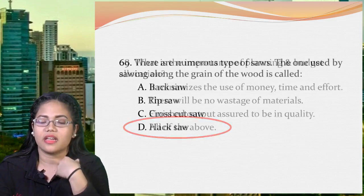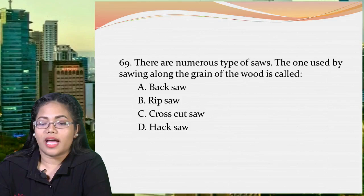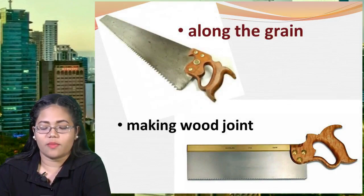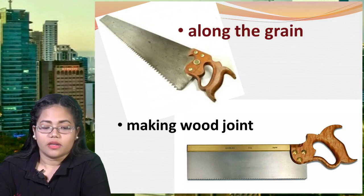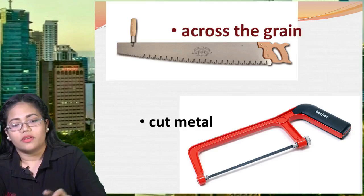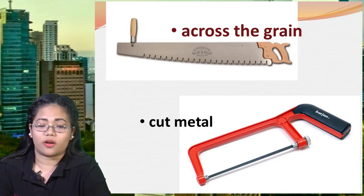Next: there are numerous types of saws. The one used for sawing along the grain of the wood is called A: bakso, B: ripsaw, C: crosscut saw, or D: hacksaw. The correct answer is letter B, ripsaw. Remember: ripsaw is used along the grain; bakso is for making wood joints; crosscut saw cuts across the grain; and hacksaw is for cutting metal.